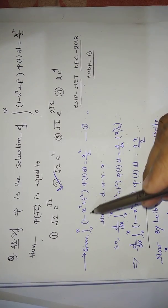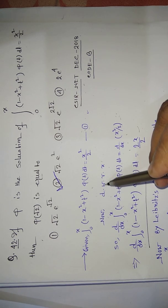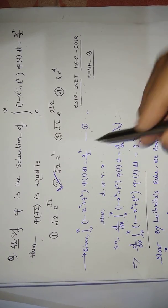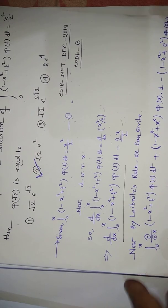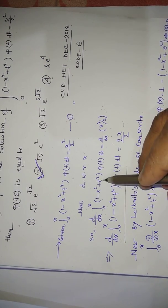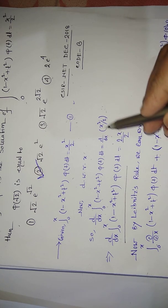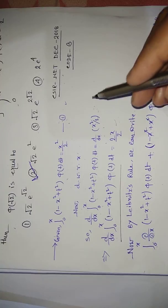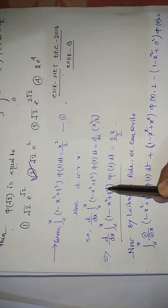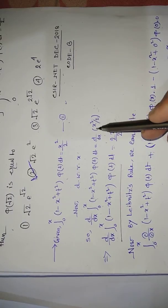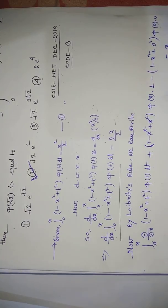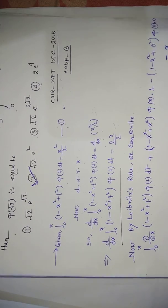Differentiating both sides with respect to x: d/dx of the integral from 0 to x of (−x² + t²)φ(t) dt equals d/dx of x²/2, which gives x. We will apply the Leibniz rule here.